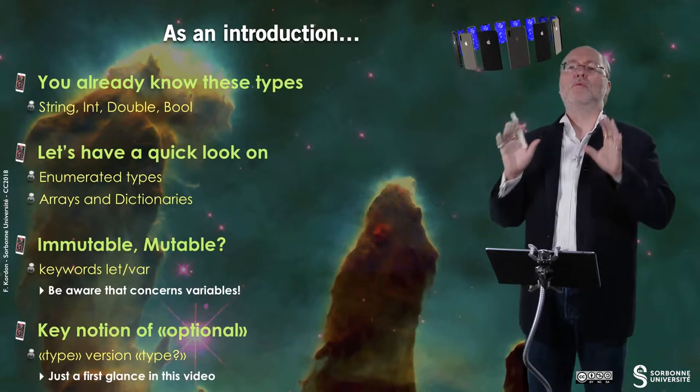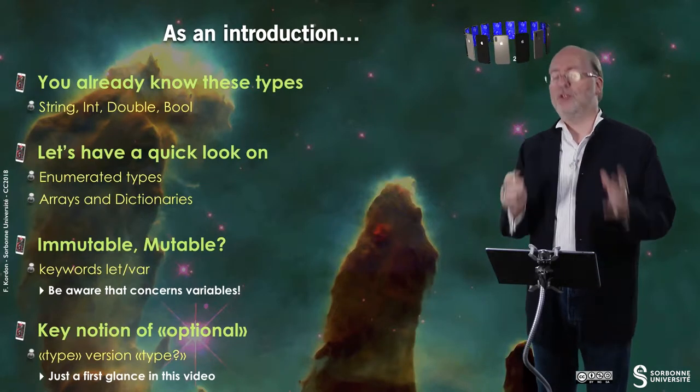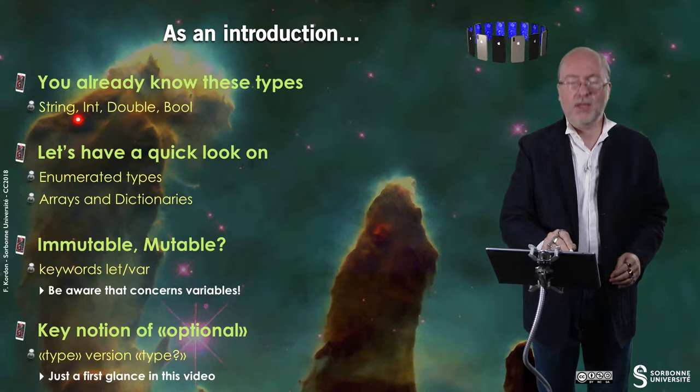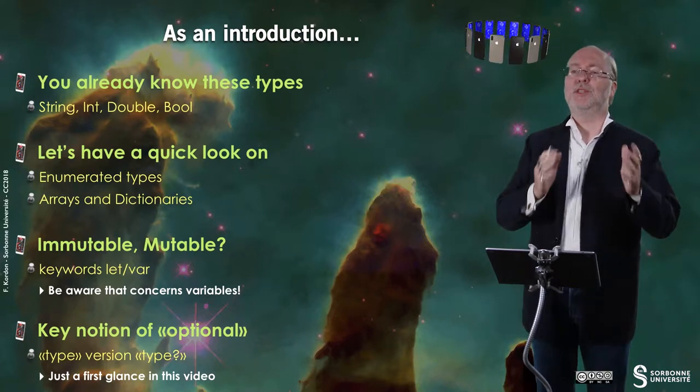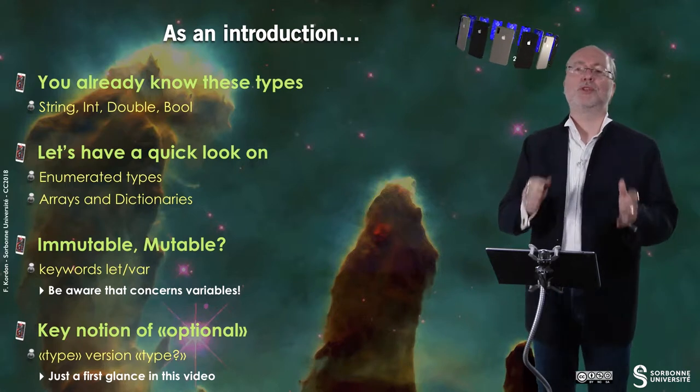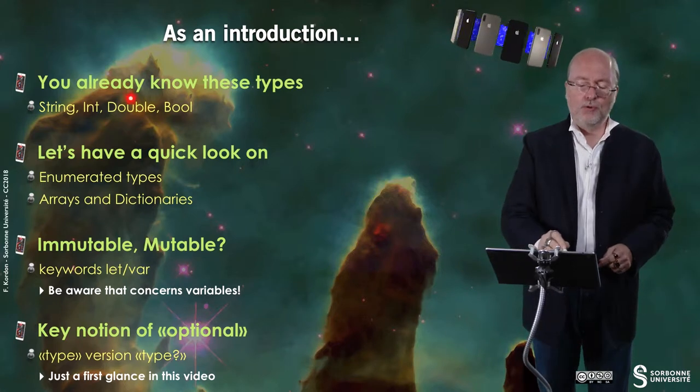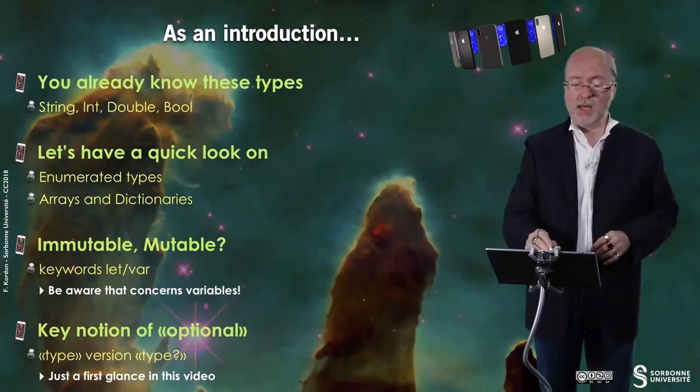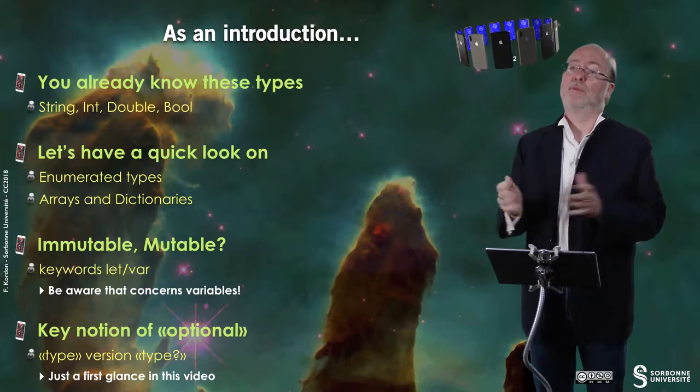Hello everybody, in this video I will present you the basic types in Swift. You already know most of these types, there are no surprises. String, this was also mentioned in a previous video. Int, this was also mentioned in a previous video. Of course you also have double, doubles are in fact double precision floating points, and you have the bool type for boolean.